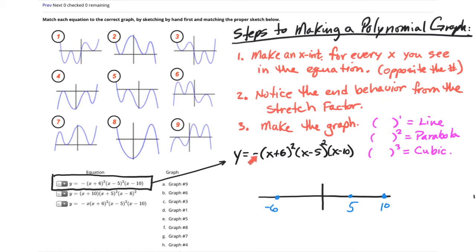Now the end behavior is found from the equation by looking at what the stretch factor is. In this case, the stretch factor is negative 1. When it's negative, the graph will finish going down. If this were positive, then you're looking for a graph that finishes going up.